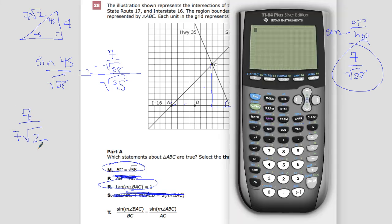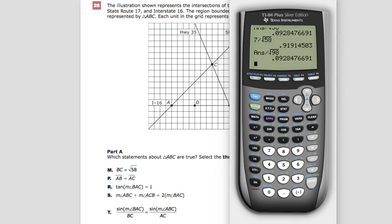Fortunately for us, we don't actually need to do that. Instead, I can just bring up this calculator here and make it work. I need to make sure that this is in degree mode. Because if it's not, it's going to be a problem. So sine 45, and I'm going to divide that by the square root of 58. That's the value I'm trying to recreate on this side. So I'll do the numerator first and divide that by the square root of 98. This and this are the same. So T is correct.